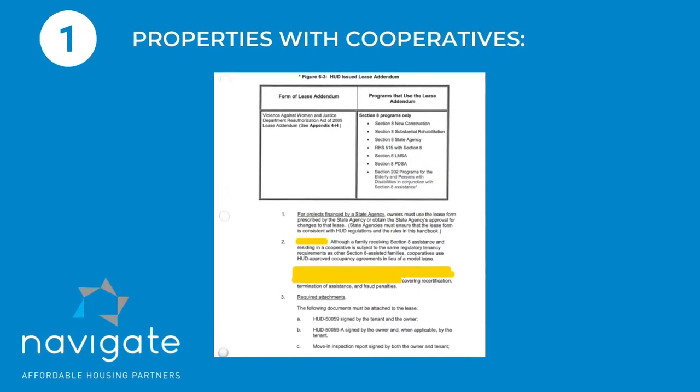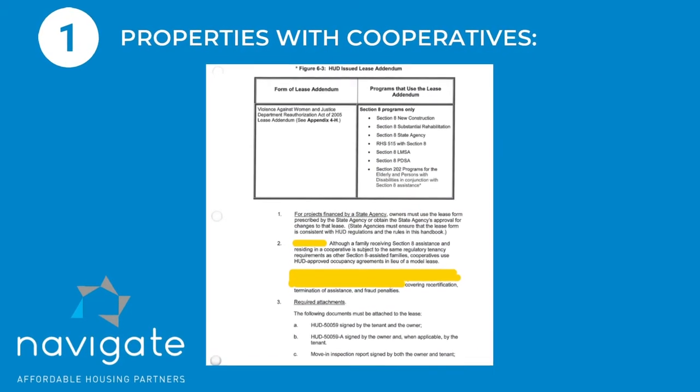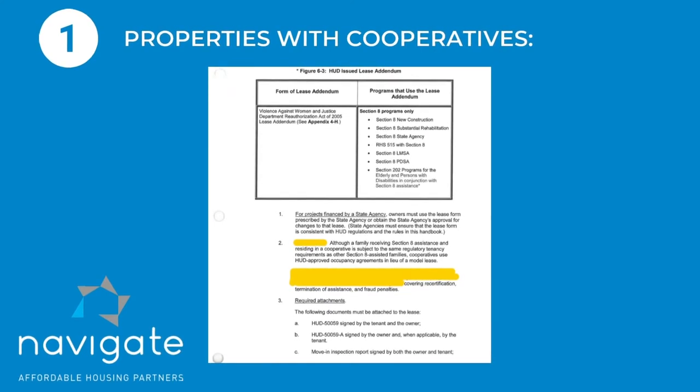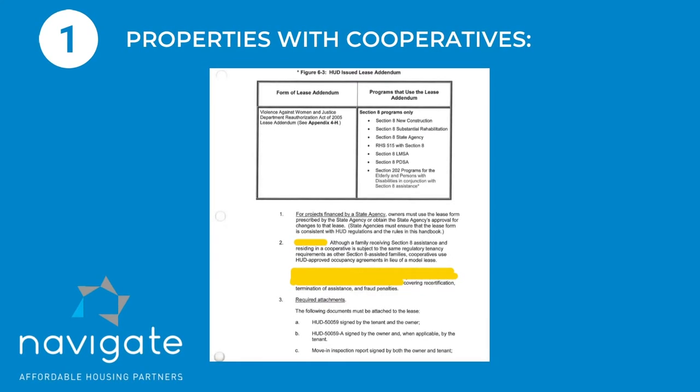Today we will have three more common findings. The first one: we have trouble with properties that have cooperatives. If you're managing a cooperative and you don't want to use the HUD lease, you don't have to. You can use the occupancy agreement, but you need to check the 4350.3 handbook, chapter 6, paragraph 6-5, and make sure that your occupancy agreement includes the paragraphs from the HUD model lease.